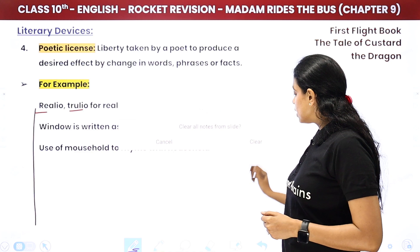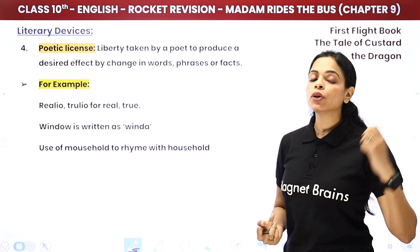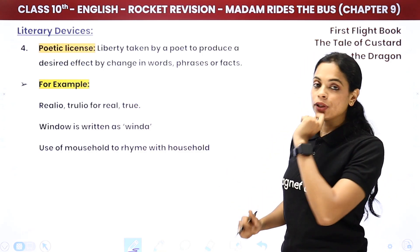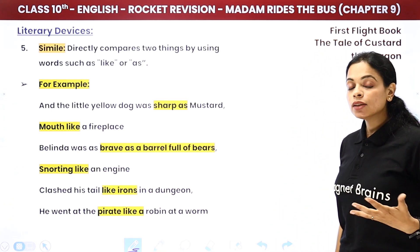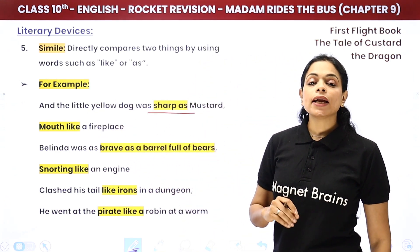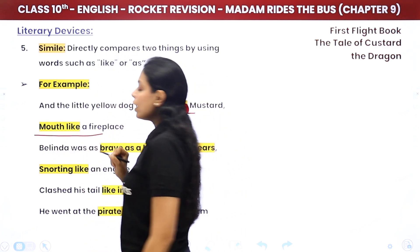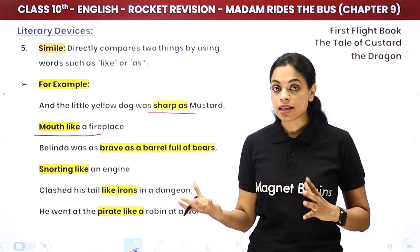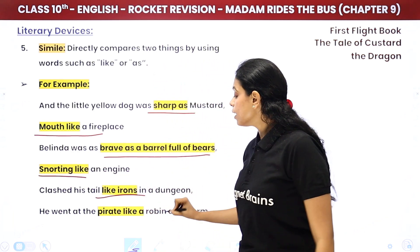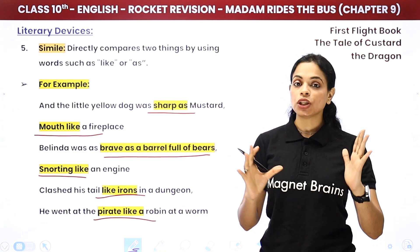Poetic license — words like 'realio' and 'trulio' are not real words, but the poet twists words slightly to match the rhyming scheme — that is poetic license. Simile — comparison using 'as' or 'like': 'sharp as mustard,' 'mouth like a fireplace,' 'brave as a barrel,' 'snorting like an engine,' 'like irons,' 'like a robin at a worm' — all are similes.